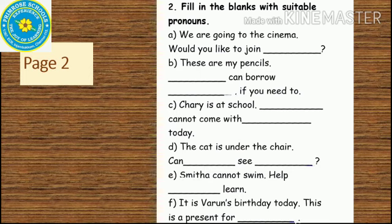Third one: Cherry is at school. She cannot come with us today. Next: the cat is under the chair. Can you see it? Next: Smita cannot swim. Help her learn.